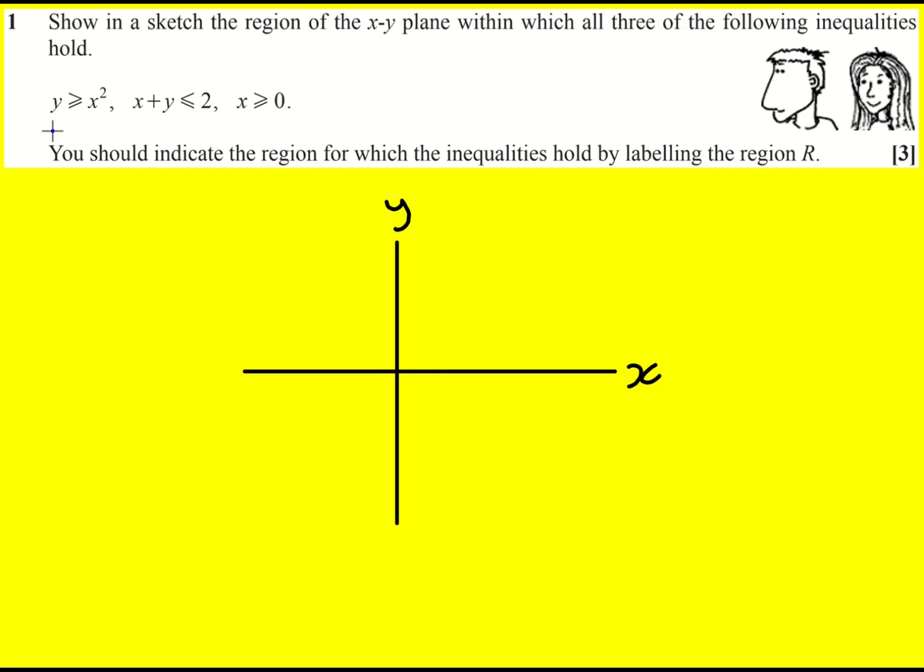So first up, y is greater or equal to x squared. Well, I'm going to plot y equals x squared, and then we'll deal with the greater equal to at a later point. However, because the greater equal to includes x squared, this is going to be a solid line. And y equals x squared looks a little bit like this parabola.